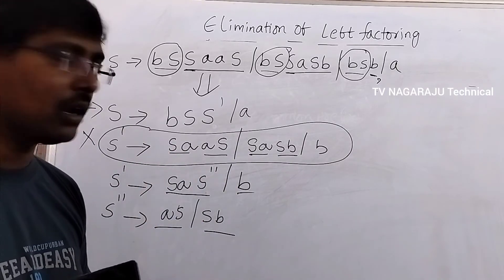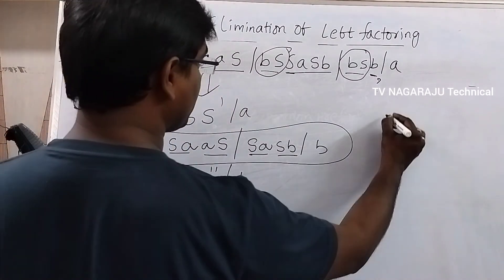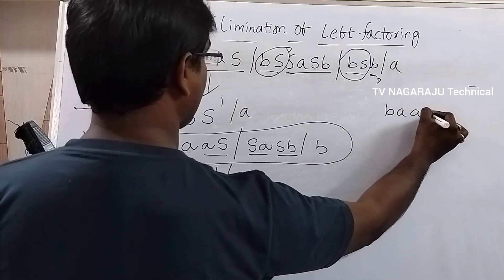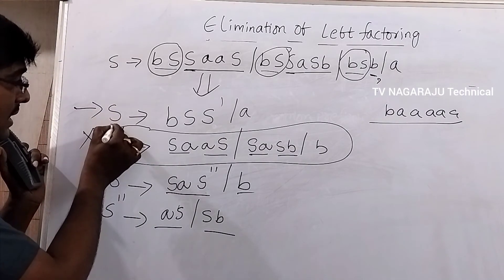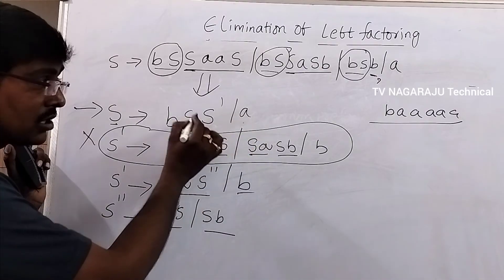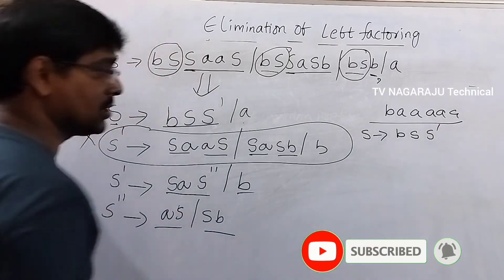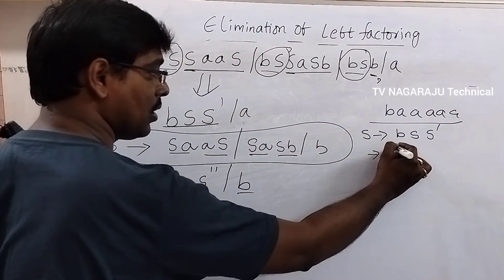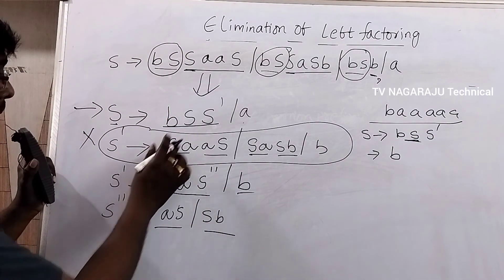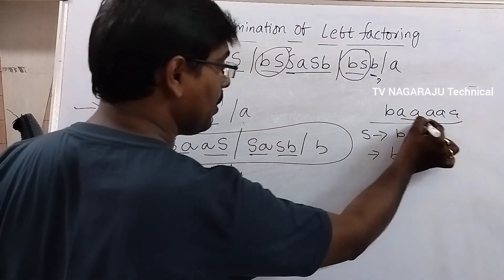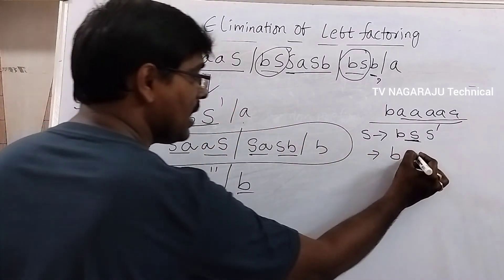This is the way to eliminate left factoring. Consider an example string: suppose the string is b-a-a-a-a-a-a. What is the procedure? We start from S, which tends to bS S-dash. Now, doing a leftmost derivation, b is matched and then S is replaced.